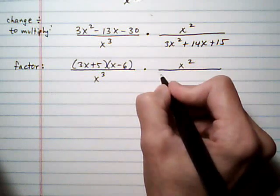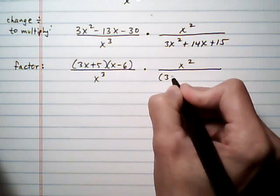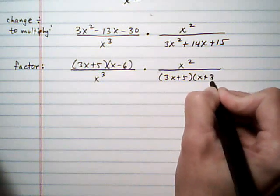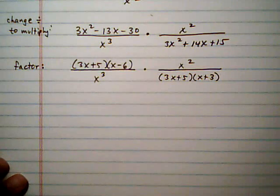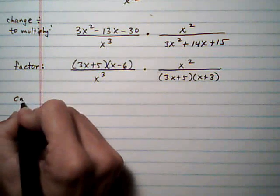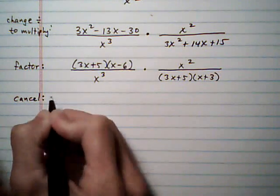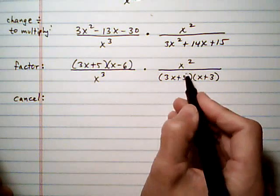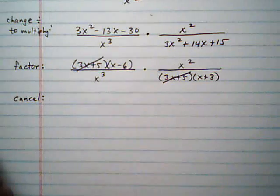and the 3x squared plus 14x plus 15 factors is 3x plus 5 times x plus 3. Now we want to look and see what's in common and cancel the common factors. So let's say we've got 3x plus 5, top and bottom, gone.